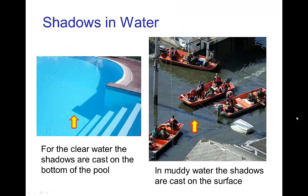Similarly with water, there are situations where you see a shadow and sometimes you don't. With clear water, there is no shadow on the surface of the water — we do see a shadow at the bottom of the pool. On the other hand, in this photo with murky water, we very clearly see a shadow on the surface of the water.